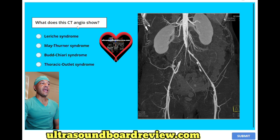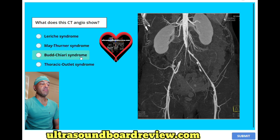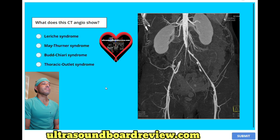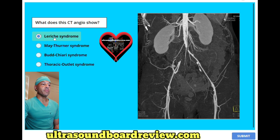What does the CT angio show? A. LaRiche syndrome, B. May-Thurner syndrome, C. Budd-Chiari syndrome, or D. Thoracic outlet syndrome? The answer is A. LaRiche syndrome.